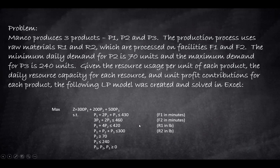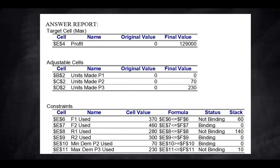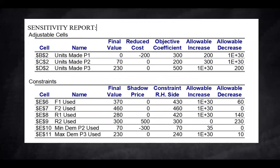I took this linear programming formulation and solved it using Excel Solver. As a result, I got the answer report, and in the next slide we'll see the sensitivity report. So what can we learn from the answer report and the sensitivity report?